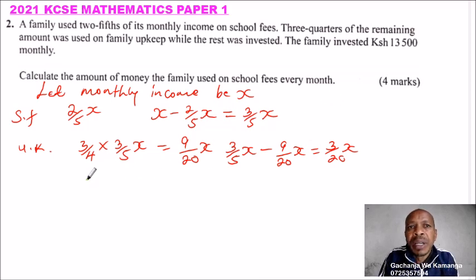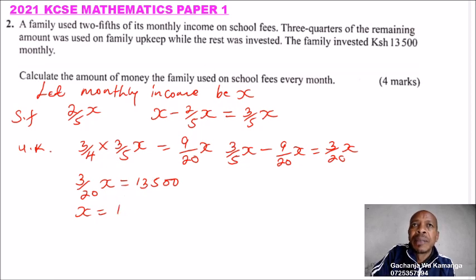So 3/20x is what was invested. We know that 13,500, therefore we say x is equal to that 13,500 multiplied by 20 and divided by 3. And when you use your calculator you get 90,000.